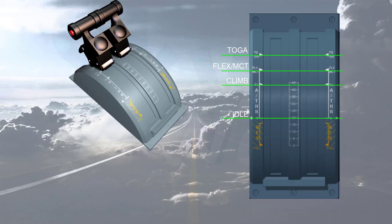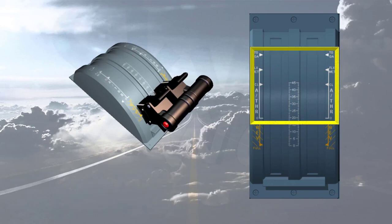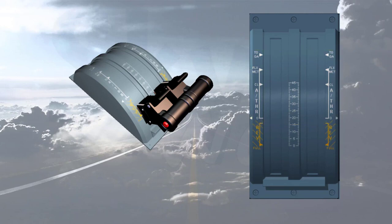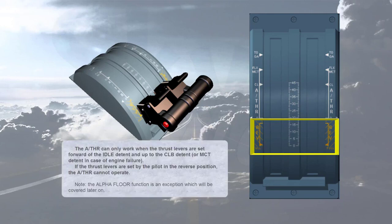The autothrust can only work when the thrust levers are set forward of the idle detent and up to the climb detent, or the MCT detent in case of engine failure. If the thrust levers are set by the pilot in the reverse position, the autothrust cannot operate. Note: the alpha floor function is an exception, which will be covered later.